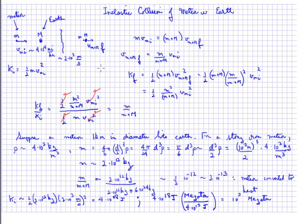Momentum would be conserved in such a collision. The initial momentum is on the left side of the equation and the final momentum on the right side, so we can use conservation of momentum to solve for the final velocity of the Earth and meteor together. It is the ratio of the mass of the meteor to the combined mass of the meteor and the Earth, times the initial velocity of the meteor.